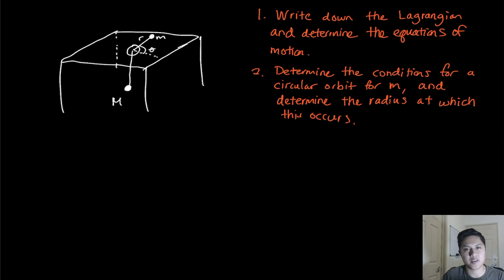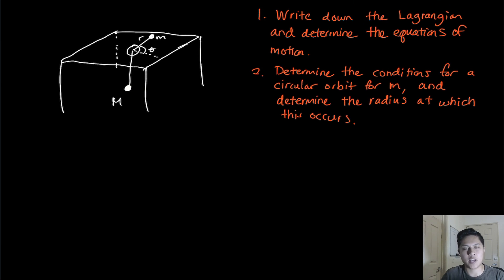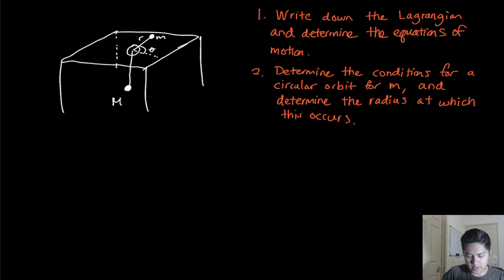Hey there, my final intellectuals. Today we're going to be looking at a problem in classical mechanics where we're going to write down the Lagrangian and the equations of motion for this system. We have a table with two masses, little m and big M. Little m is on top of the table, while big M is attached through a hole at the bottom, and they're connected by a string of total length little l.